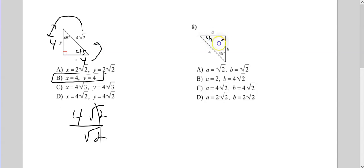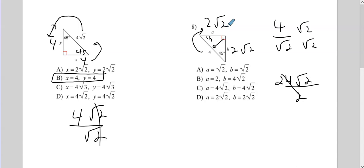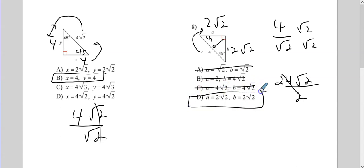Here's another 45-45-90. Here's my hypotenuse. To go to the leg, I'm going to divide by radical 2. There's no answer like that because we cannot leave radical 2 in the bottom, so we have to rationalize. On the top I get 4 radical 2, and on the bottom I simply get 2. Simplifying: 2 goes into 4 two times, so my answer is 2 radical 2 for both X and Y — that's answer D.